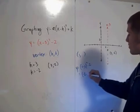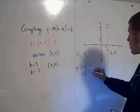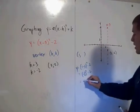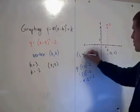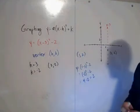1 minus 3, this is negative 2. We're going to square that, and then we're going to subtract 2. This is 4 minus 2, which is 2. So we have the point 1, 2 on our graph.